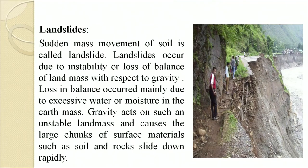Landslide is the sudden mass movement of soil. Landslides occur due to instability or loss of balance of a land mass with respect to gravity. Loss of balance occurs mainly due to excessive water or moisture in the earth mass. Gravity acts on such an unstable land mass and causes large chunks of surface material such as soil and rocks to slide down rapidly.